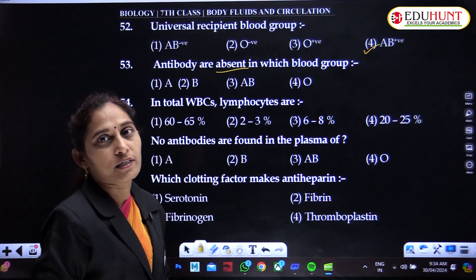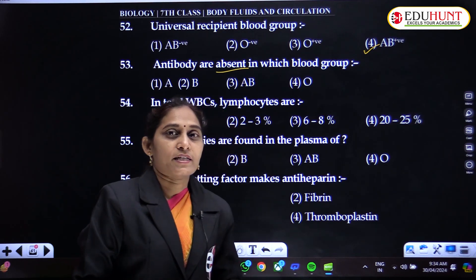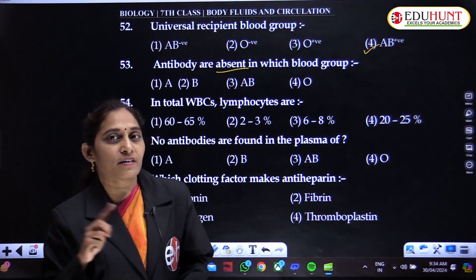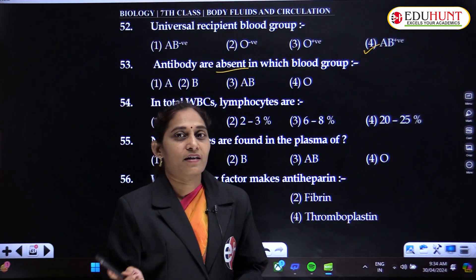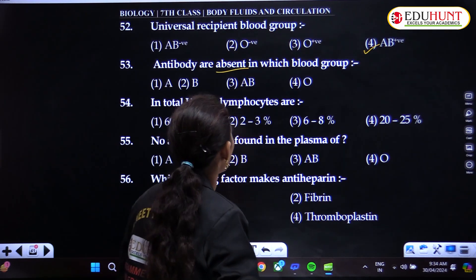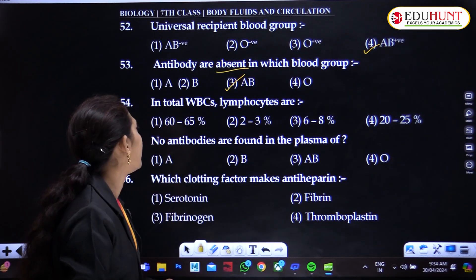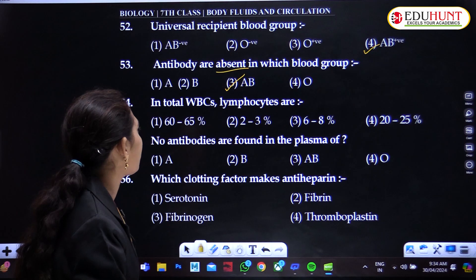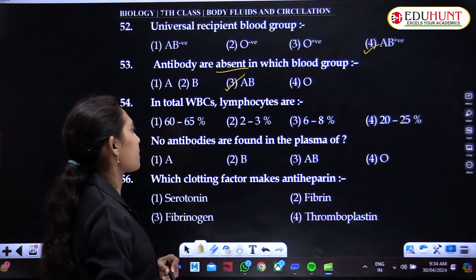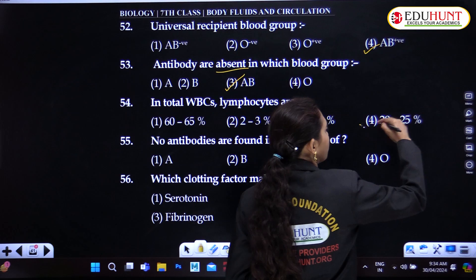Antibodies are absent in which blood group? Antigens are absent in blood group O. Correspondingly, antibodies against both A and B are absent in blood group AB. In total WBCs, lymphocytes are 20 to 25 percent.